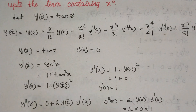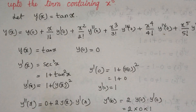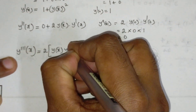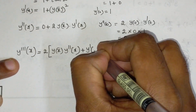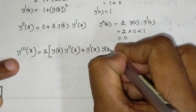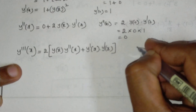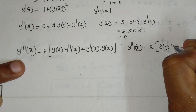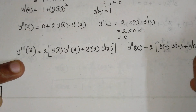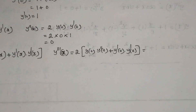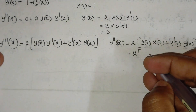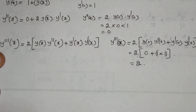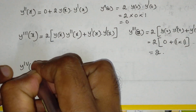To calculate y'''(x), we apply the product rule to 2·y(x)·y'(x). This gives y'''(x) = 2·[y(x)·y''(x) + y'(x)·y'(x)]. Substituting x = 0: y'''(0) = 2·[y(0)·y''(0) + y'(0)·y'(0)] = 2·[0 + 1·1] = 2.